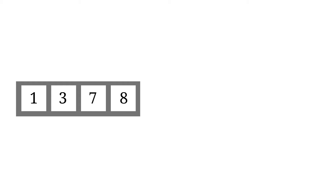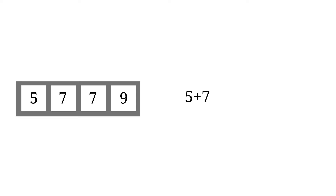It's probably easiest to explain this by example. Suppose those four numbers are 1, 3, 7, 8. Then one way to make it 24 is: you first subtract 7 by 3 to get 4, then use that 4 to subtract by 1 to get 3, then multiply 3 by 8 to get 24. Another example: if you have 5, 7, 7, 9, you can pair up — add 5 to 7 to get 12, subtract 9 by 7 to get 2, then 12 times 2 becomes 24.